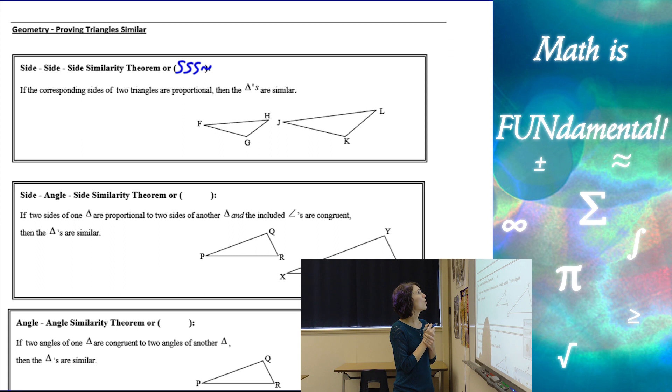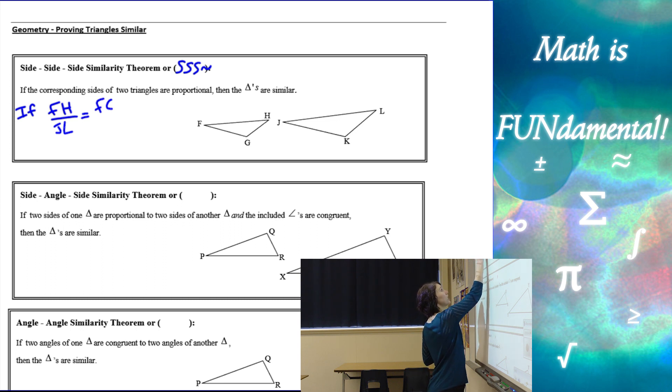So that says if the corresponding sides of two triangles are proportional, then the triangles are proportional. So what that looks like is if I can show that FH over its corresponding side, which is JL, is the same as FG over its corresponding side, JK, which is the same as HG over KL.